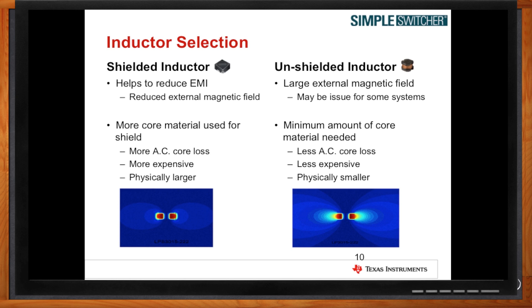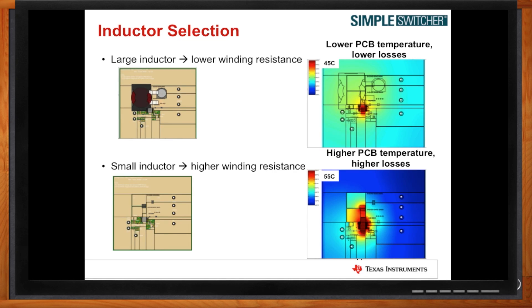Are there benefits to choosing a larger inductor? With a larger inductor, you will have lower PCB temperature and lower loss. On the right-hand side of the screen you can see that with a larger inductor the PCB temperature is a lot less, and your winding resistance will also be lower. For a small inductor, you will have higher losses and the board will get a lot hotter during operation.